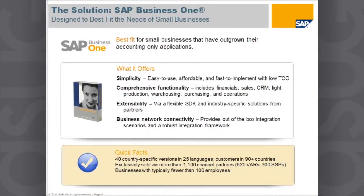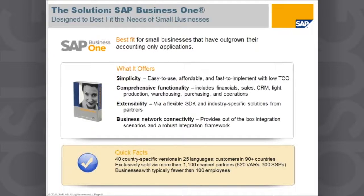The system also includes deep, rich reporting functionality and mobile access to your data. The software is extensible via a very flexible SDK, and we have a number of industry solutions available from our software solution partners — organizations who have taken that SDK and built additional complementary solutions that extend SAP Business One into process manufacturing or advanced warehousing capabilities with RFID scanning.